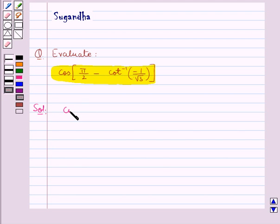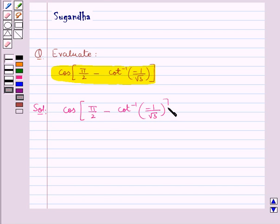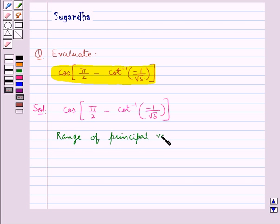We need to evaluate cos(π/2 minus cot inverse of minus 1 upon root 3). We know that the range of the principal value of cot inverse is the open interval (0, π).